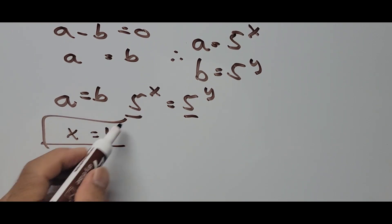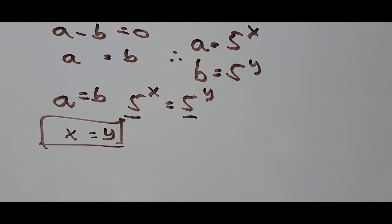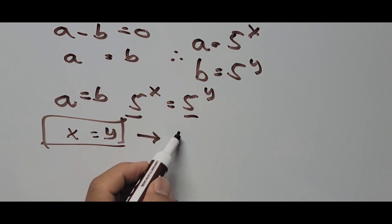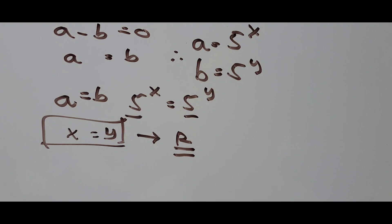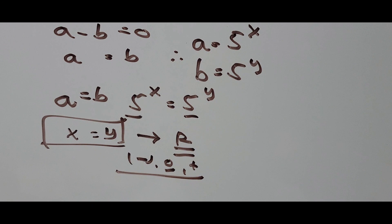That's the answer. x equals y simply means that if we plug these values into the original equation, x and y can be all real numbers — that includes negative numbers, zero, and positive numbers, as well as rational numbers.